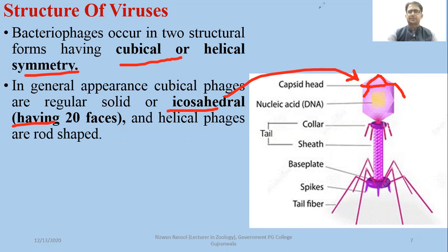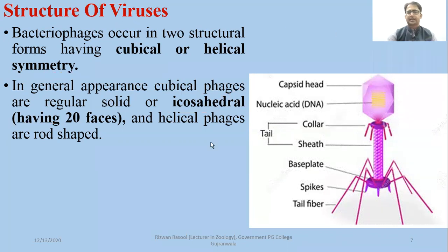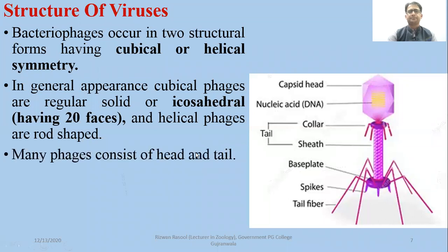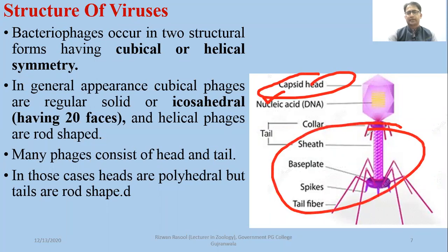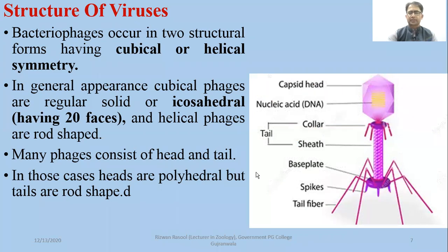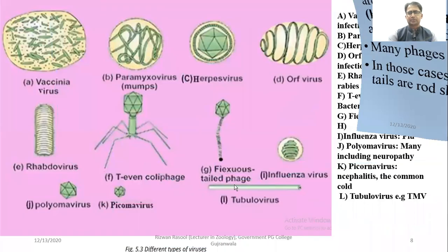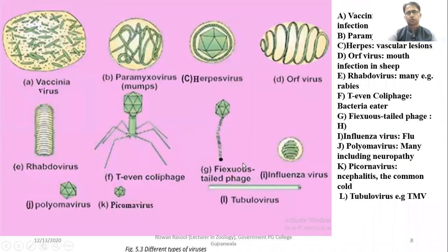Some phages, as we have seen in the picture, are helical or rod-shaped. Many phages have a head portion as well as a tail portion. It is not the case that all phages have tail fibers, spikes, and base plates — these features vary among different phages and viruses.